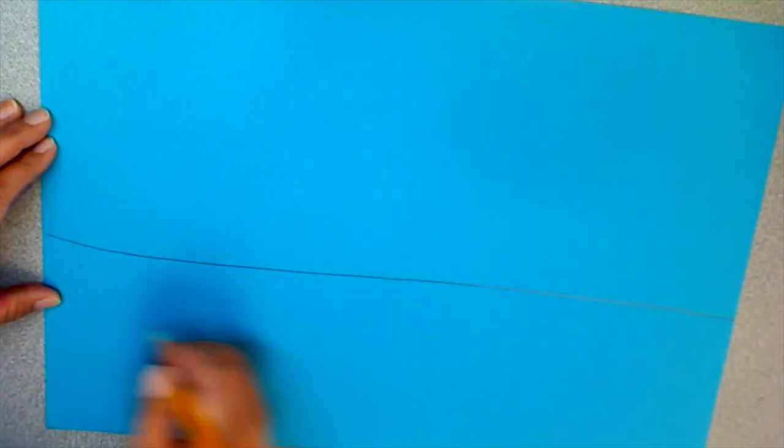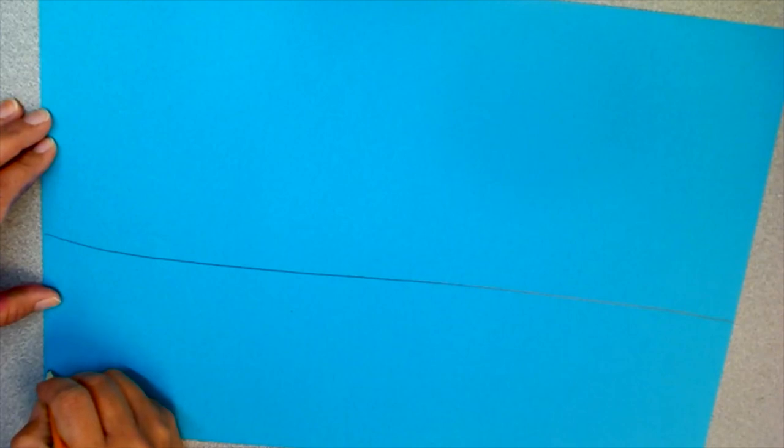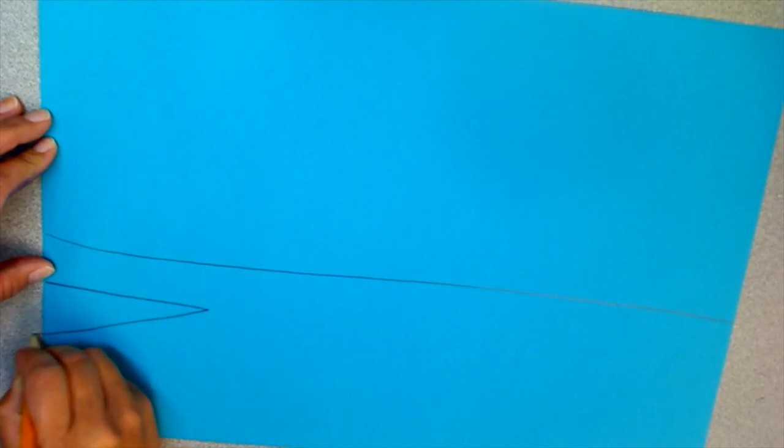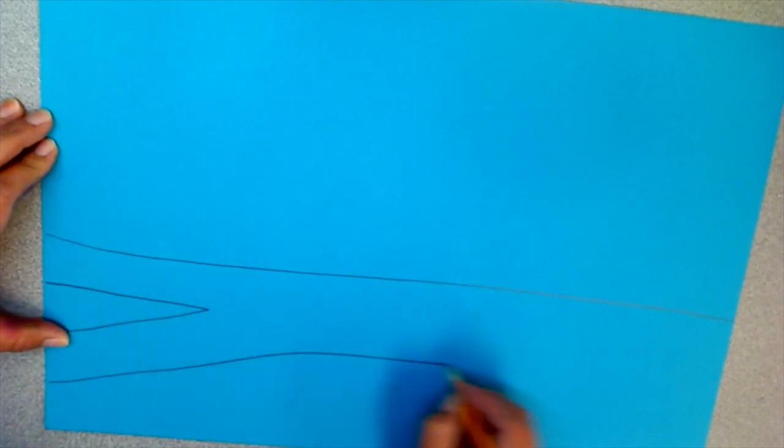And then you're going to make a V shape, or a carat, or a triangle going off your paper, and then a line going across the bottom. That's going to make it look like a branch.